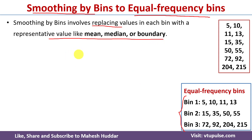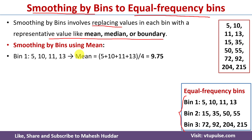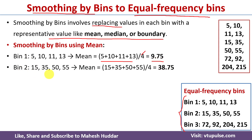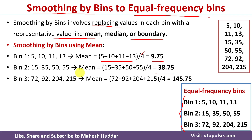First we will calculate the mean for each bin. For the first bin, the mean is the sum of the data points present in the bin divided by the total number of data points in that bin. We add all the data points and divide by four, which equals 9.75. For the second bin the mean is 38.75, and for the third bin the mean is 145.75.